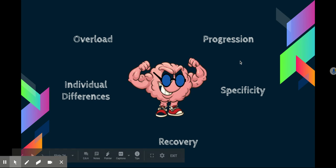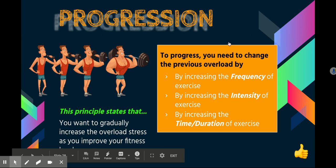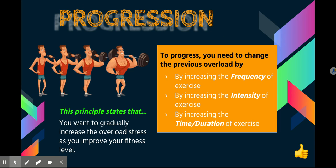Progression states that you want to gradually increase the overload stress as you improve your fitness level. For example, if you're getting into a fitness program for the very first time and you're a little overweight, you can't go from walking to running. So you go from normal walking into speed walking with weight — that improves your fitness level. Now you've lost weight and your body has adapted. You can start jogging as you prepare yourself for running. That's progression: when you increase your overload stress, conquer one level, then move to the next. Once again, increasing the frequency, intensity, or time of exercise.